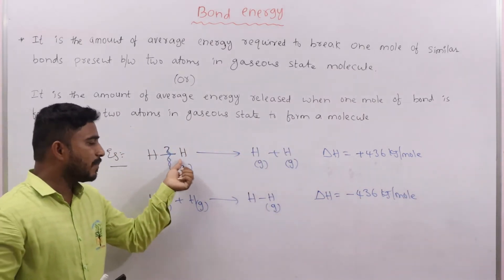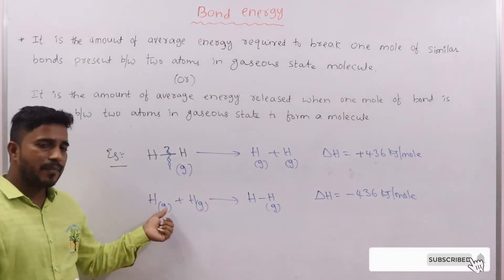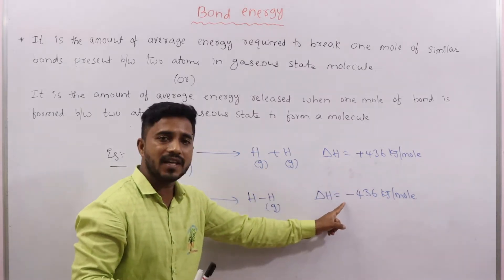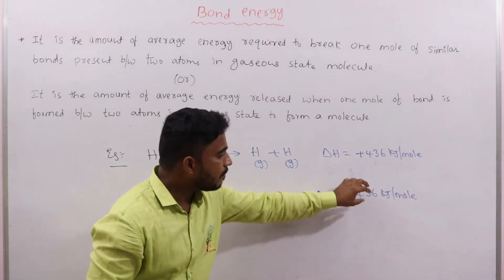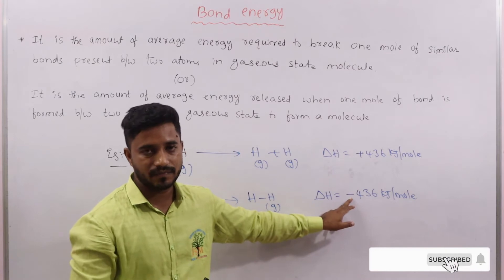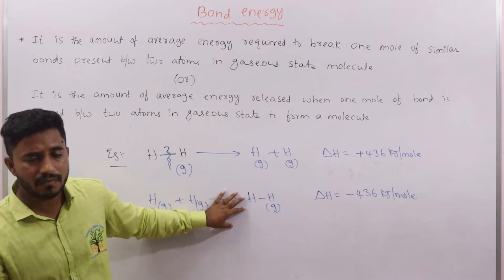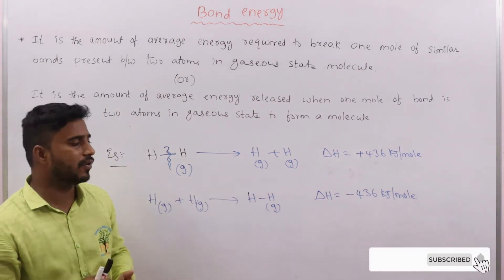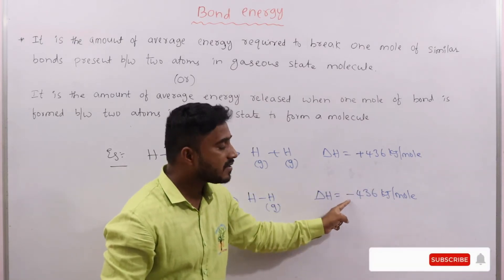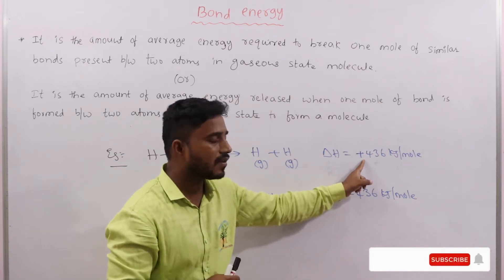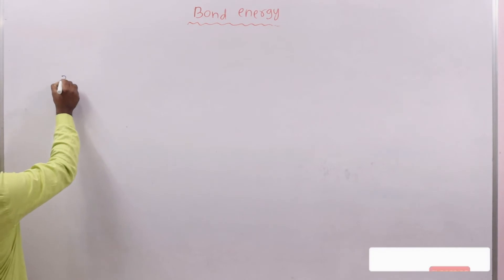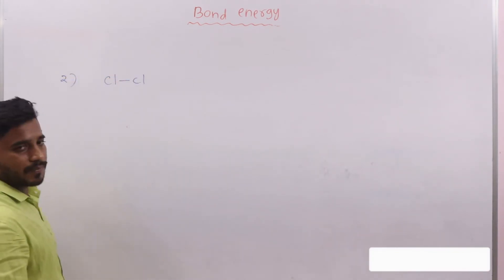When bond breakage takes place between hydrogen atoms, energy is absorbed (positive sign). When bond formation takes place between hydrogen atoms, energy is released (negative sign). The magnitude is the same but the signs are different. Bond breakage is an endothermic process and bond formation is an exothermic process.